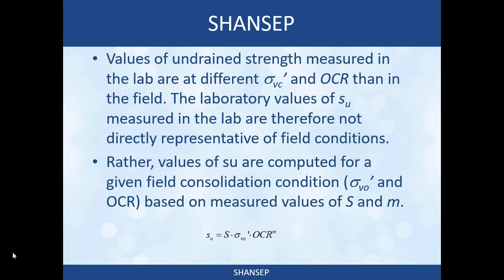So the SHANSEP procedure allows us to understand not only what is the undrained strength right now in the field, but also what the undrained strength will be in the future under different consolidation conditions. This is much more powerful than, for example, running unconsolidated undrained tests on field samples, which might tell you the current strength but give no indication of future strength. The same limitation applies to vane shear tests or correlations with cone tip resistance.